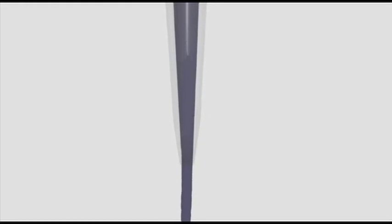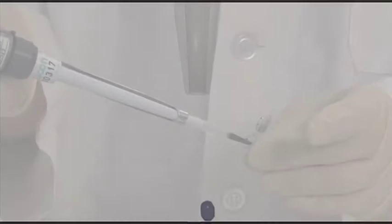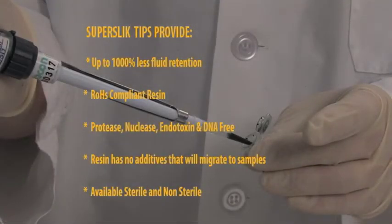This is achieved by combining a diamond polished mold surface with our own unique formulation of resin. Our resin formula increases the hydrophobicity of the tip surfaces, encouraging proteins to fold onto themselves and expel cleanly from the tip orifice. Up to 1000% less fluid retention.